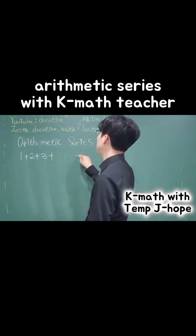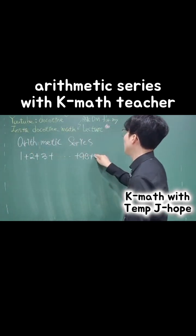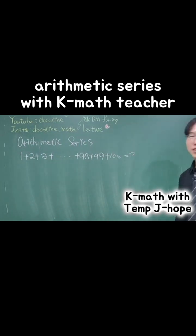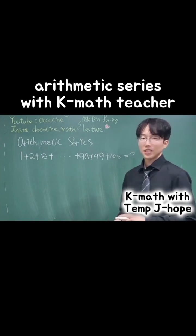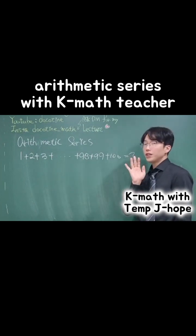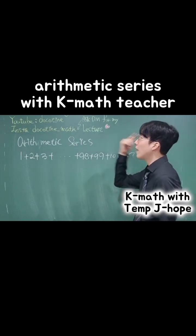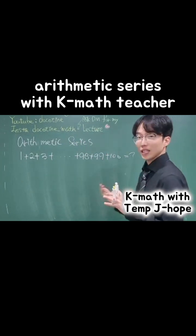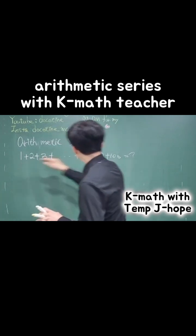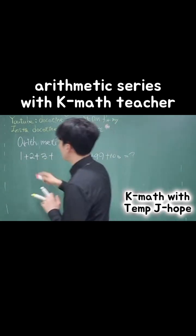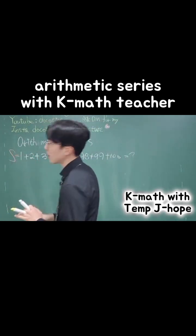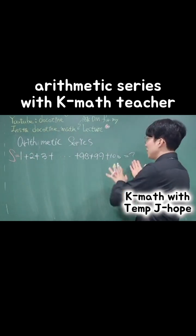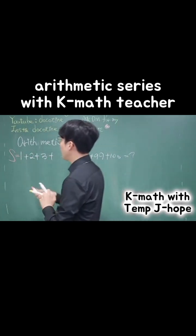Does anybody know the answer to this? This is a very important example to understand arithmetic series. So let's try this: the sum from 1 to 100 equals S, because it is a series. Now I will rewrite this in the opposite way —